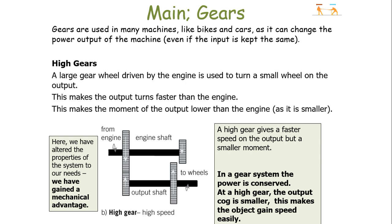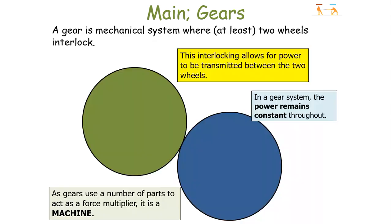In high gears, a large gear wheel is driven by the engine to turn a small wheel on the output. This makes the output turn faster than the engine, which makes the moment of the output lower because we've got a smaller wheel. We've gained a mechanical advantage because it allows a faster speed on the output but a smaller moment, which is useful because it makes the object maintain a steady high speed — which is what you want for a high gear.